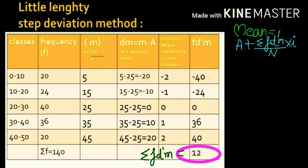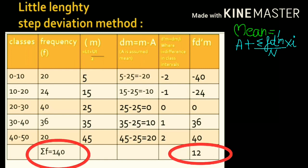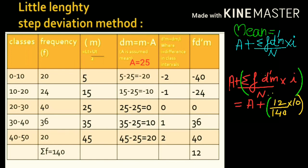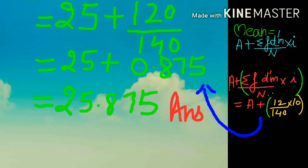We put all the values into our mean formula. The assumed mean is 25. Following BODMAS rules, we solve multiplication and division first: σfd'm upon n into i equals 12 into 10 upon 140, which equals 0.857. Then we add with 25, so the final answer is 25.857.